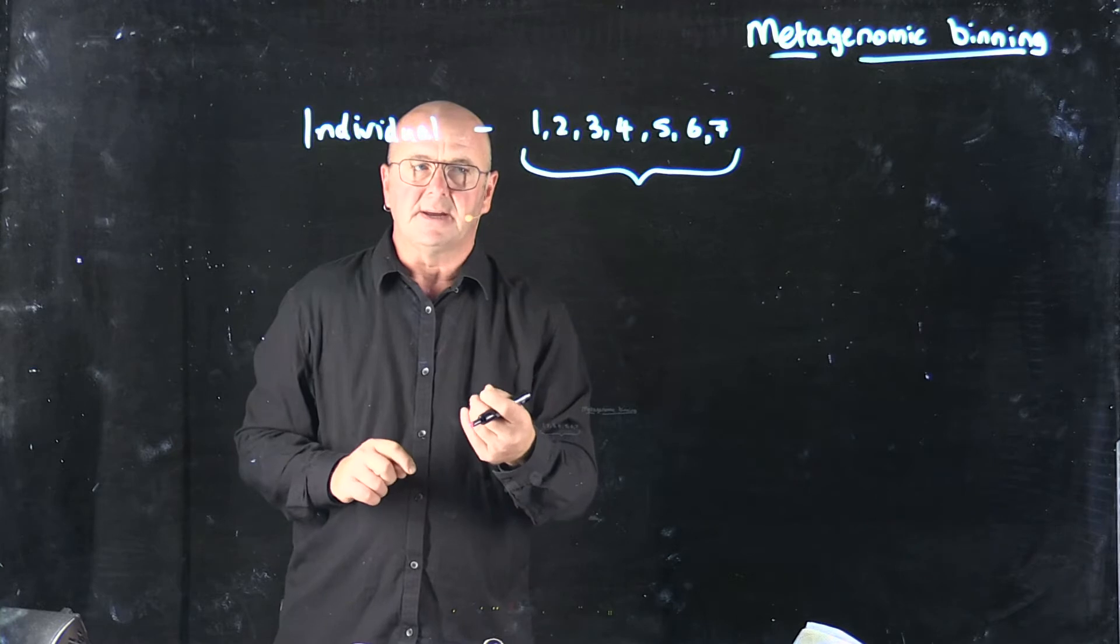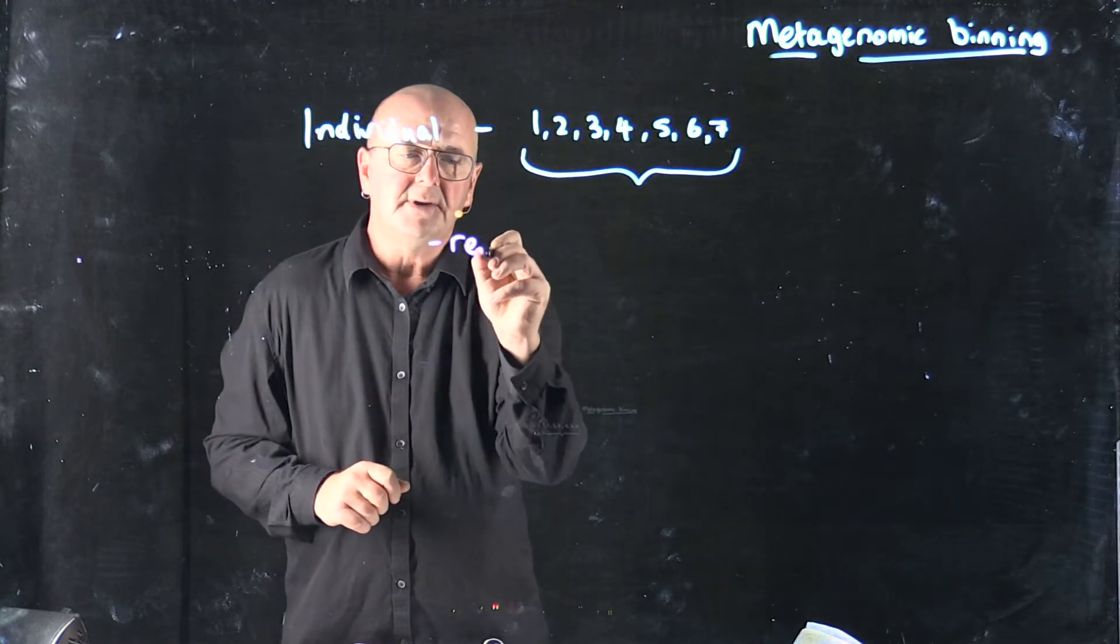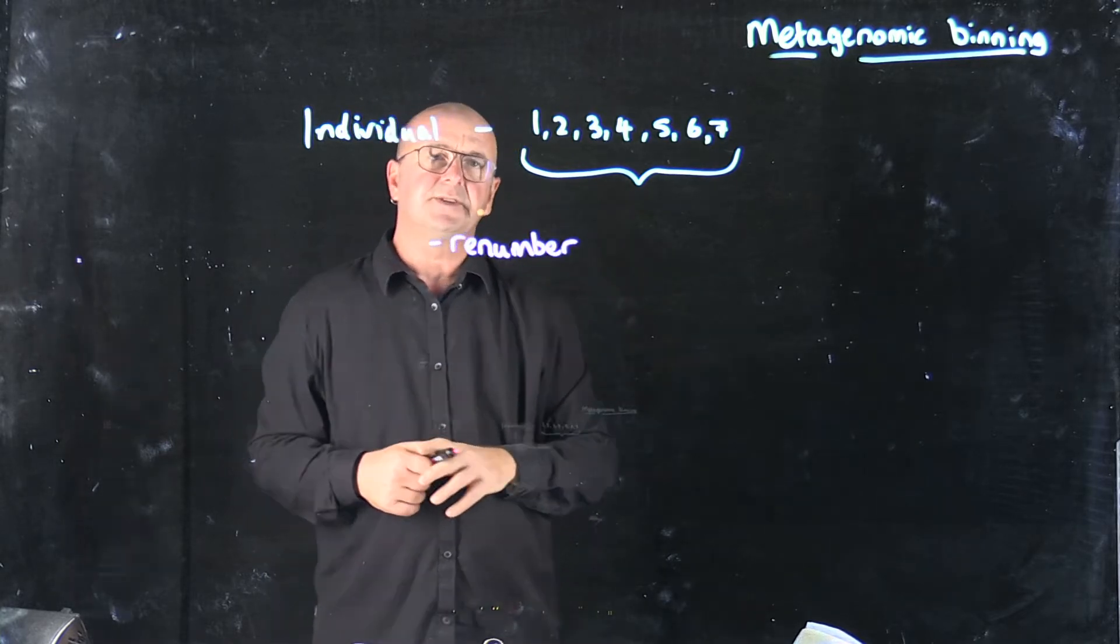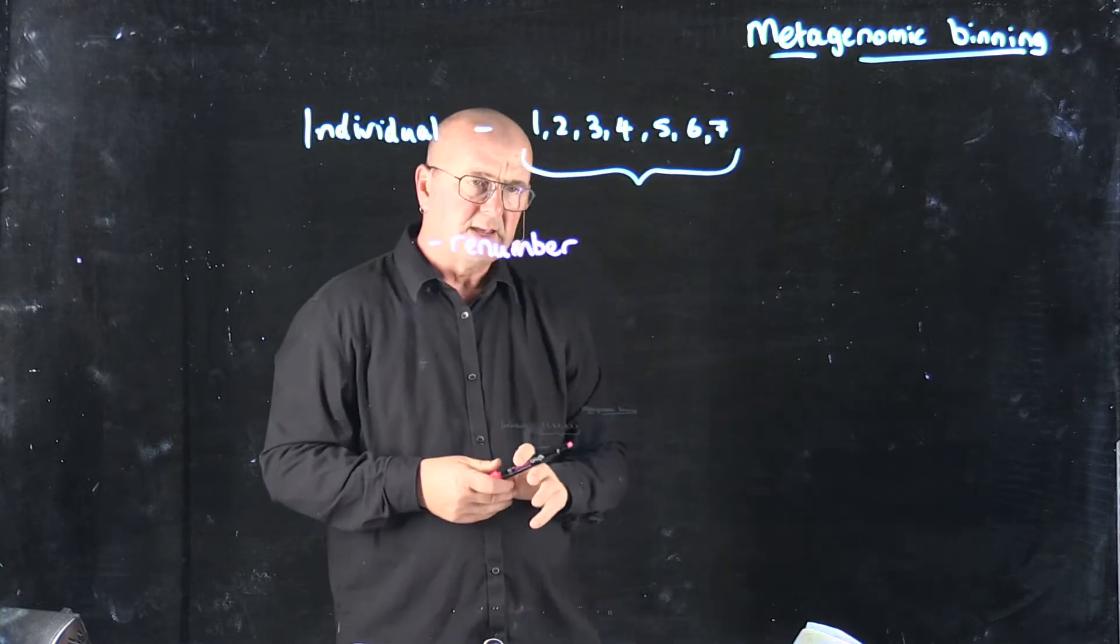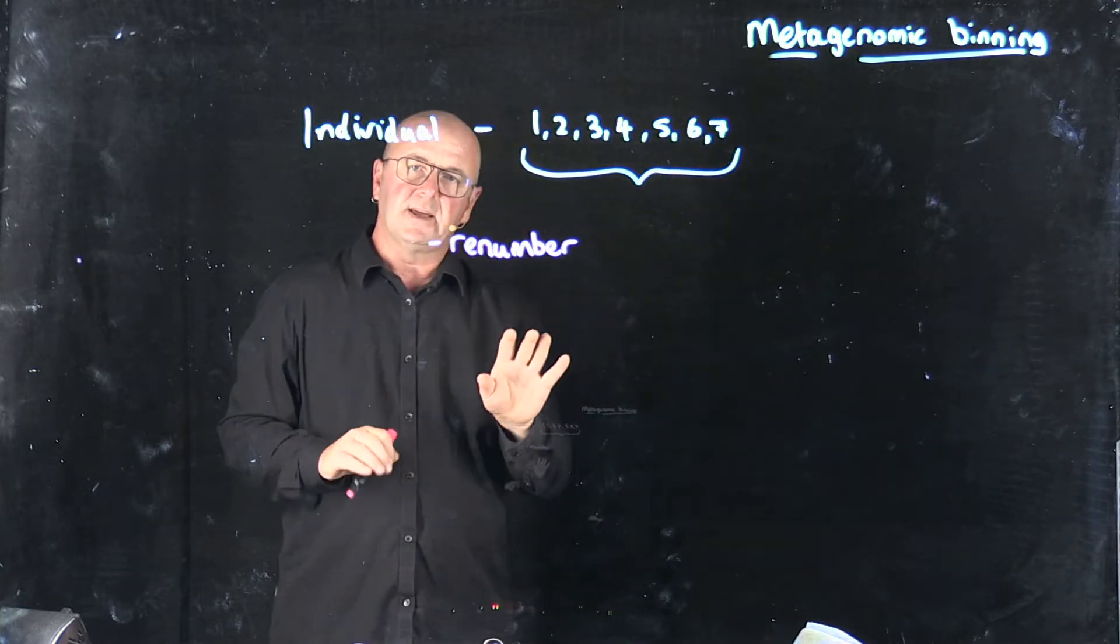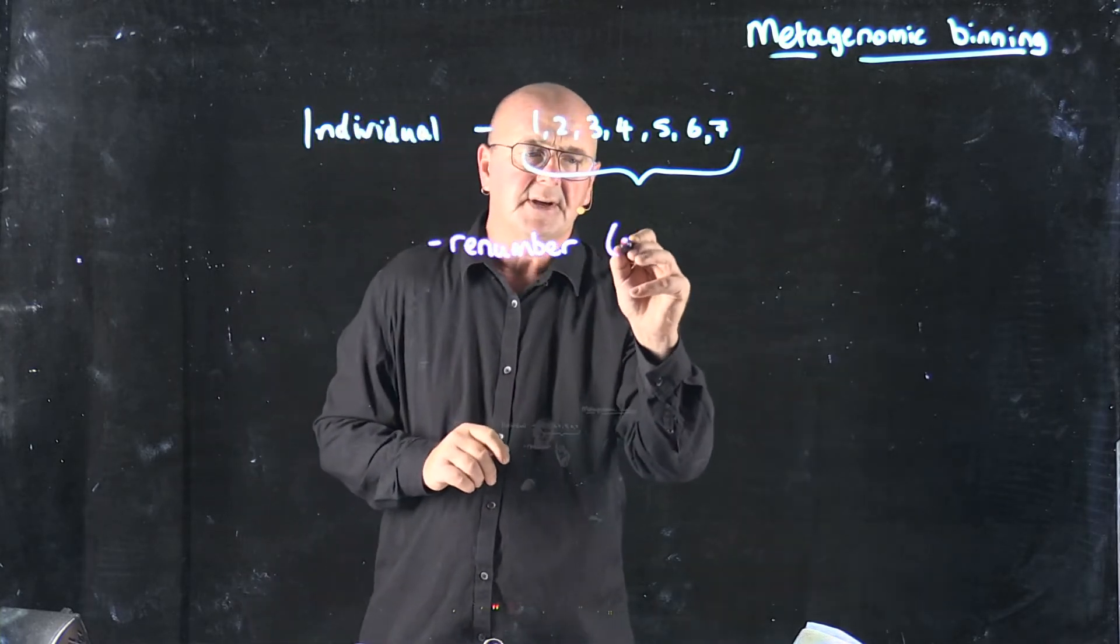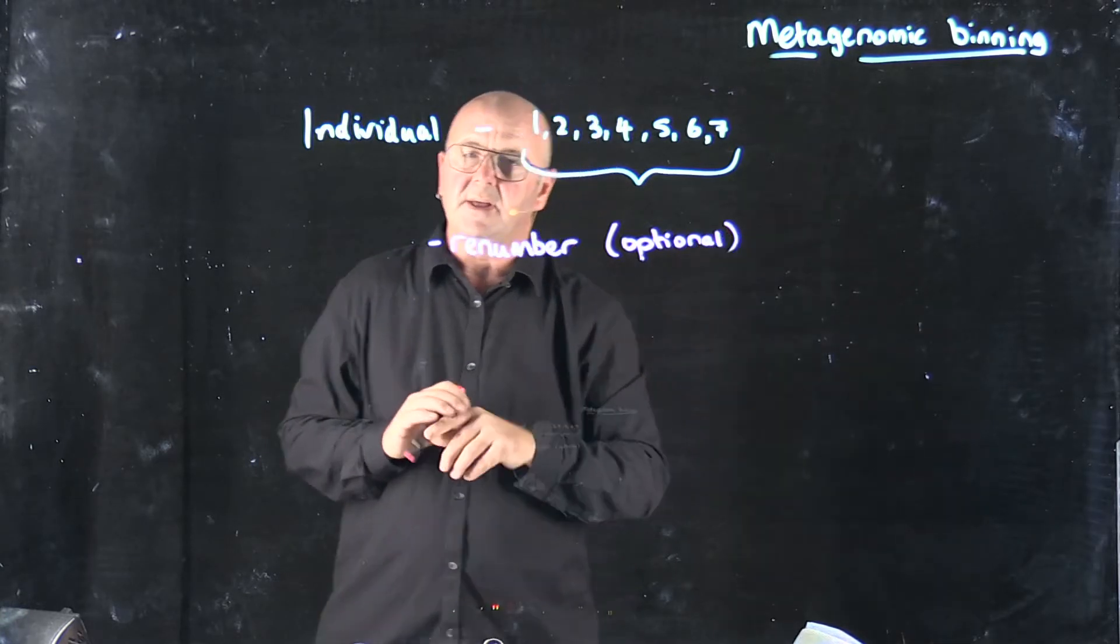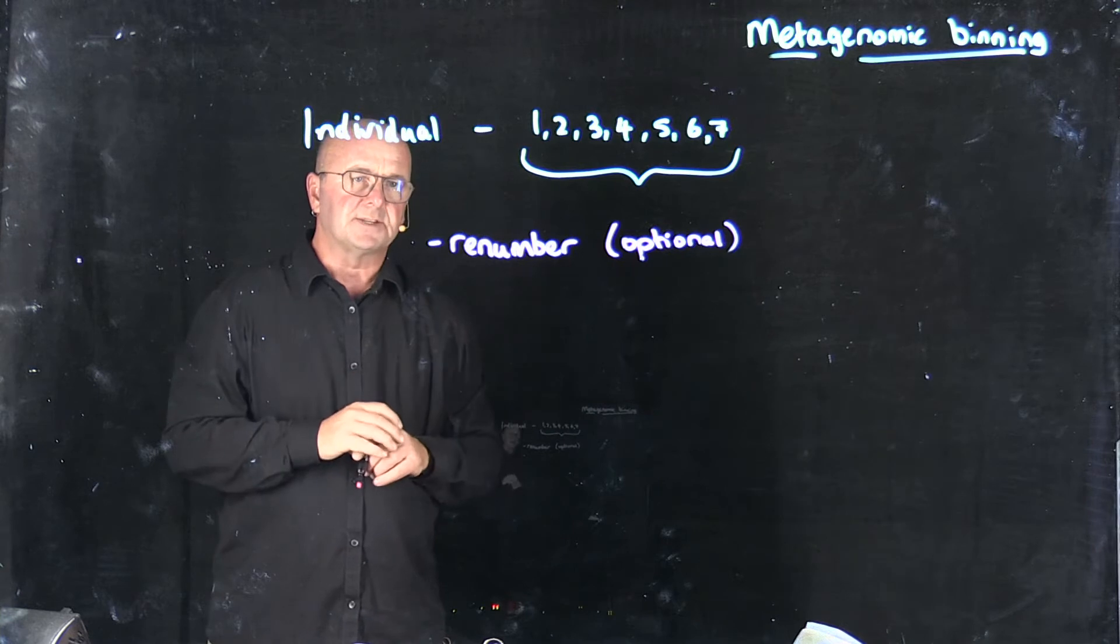And so the basic idea with binning is that we take these samples and we start by renumbering them, and we renumber them in such a way that we can identify where each read came from. Now, as we'll see a little bit later on, we don't necessarily need to do this renumbering step. It's a little bit optional. But in some of the original binning steps that we did, we had to do this.